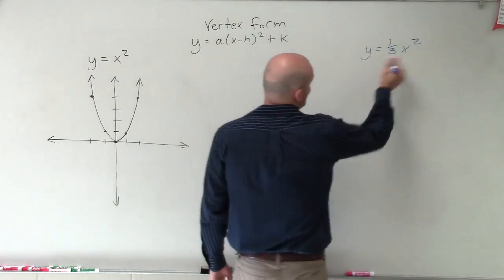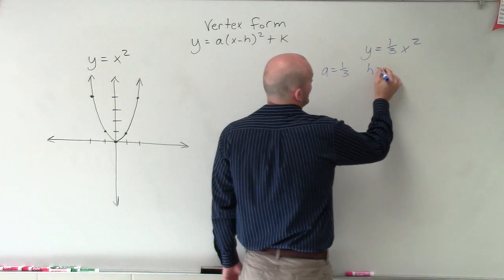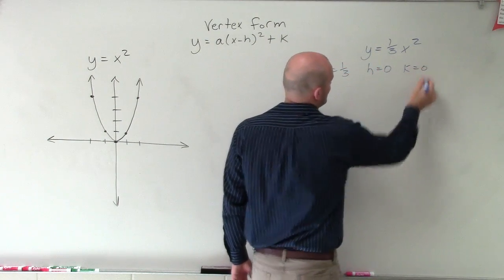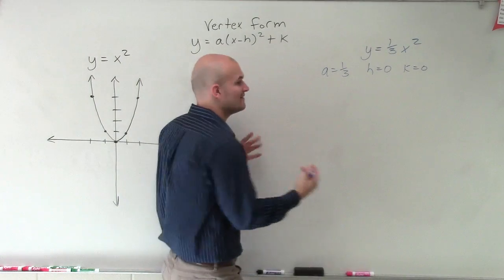So when graphing y equals 1/3 x squared, I'm going to say a equals 1/3, h equals 0, and k equals 0. So therefore, my graph is not going to shift left to right at all, but now we're going to have a dilation.